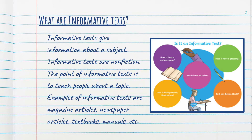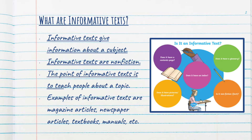What are informative texts? Informative texts give information about a subject or a topic. Informative texts usually are non-fiction. The point of informative texts is to teach people about a topic or a subject.